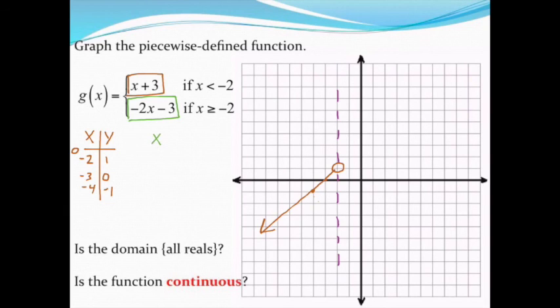So once again, I'm going to make an xy table. And I'm going to include that special boundary level to start with. So I'm going to include negative 2 and make a note of it this time that I can be equal to negative 2 this time. So I'll have a filled in circle when I plot this point.